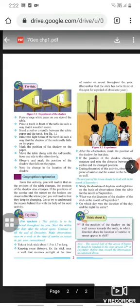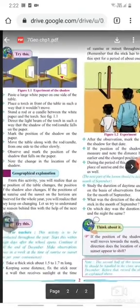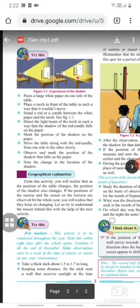Next step: Direct the light beam of the torch in such a way that the shadow of the rod or candle falls on the paper. Mark the position of the shadow on the paper and move the table along with the rod or candle from one side to the other slowly. Observe and mark the position of the shadow that falls on the paper and note the change in the location of the shadow.